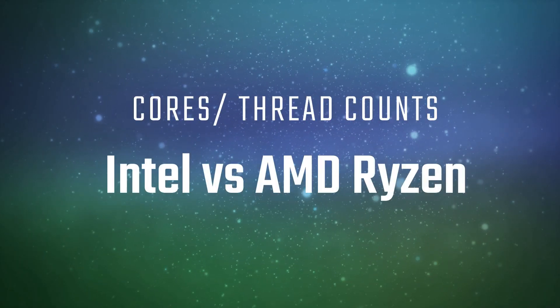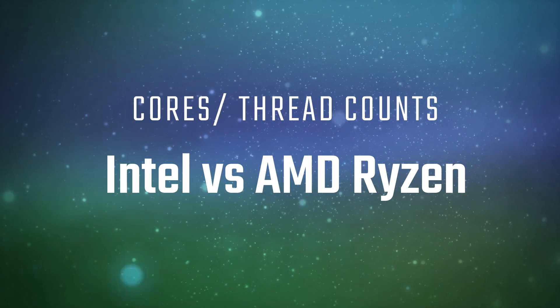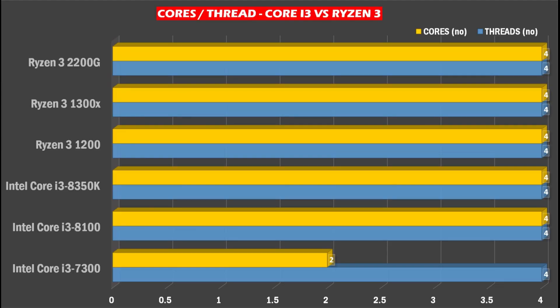Looking at core count and thread count: the i3 and Ryzen 3 are budget, entry-level gaming processors. Ryzen 3 has a slightly lower core and thread count compared to Intel. But Intel in the 8th generation is almost equal to 4 cores and 4 threads, making it a mid-range processor.